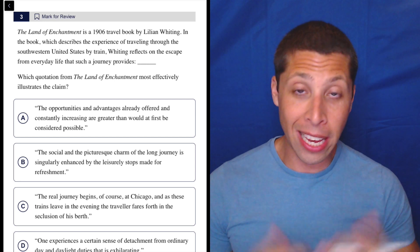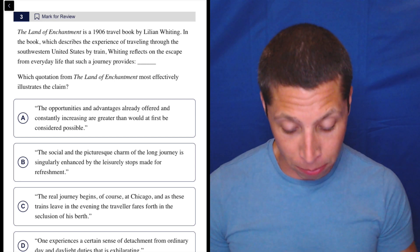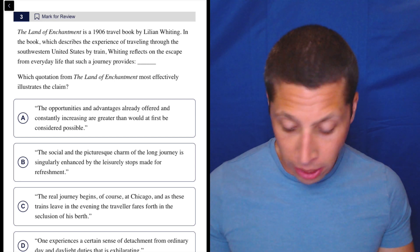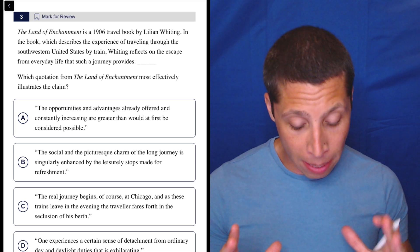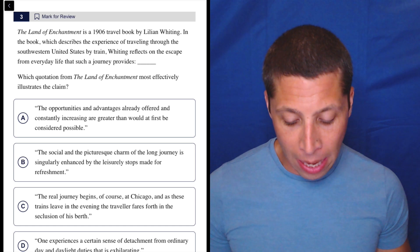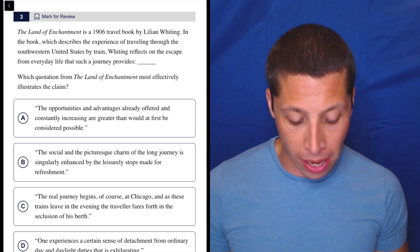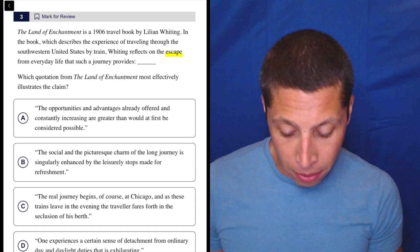Same question. What illustrates the claim? We got to go to the passage to understand the claim. So Land of Enchantment is this book. In the book, which describes the experience of traveling through the Southwest United States by train, that's not really the claim yet. Whiting reflects on the escape from everyday life that such a journey provides. So escape from everyday life.